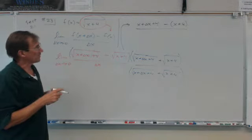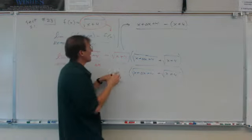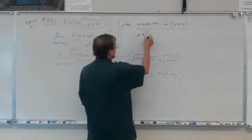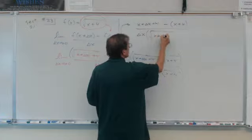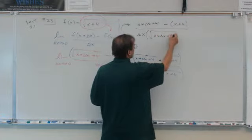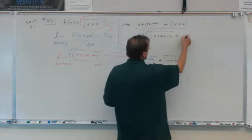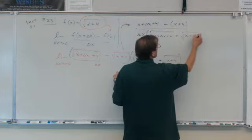I'm not writing the limit up there, but we know eventually we're going to take the limit. The denominator is going to have a delta x in it and then just leave this one in parentheses. So it's going to be root x plus delta x plus 4 plus root x plus 4.